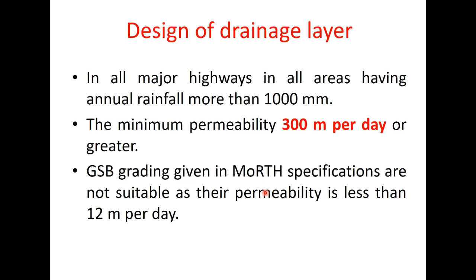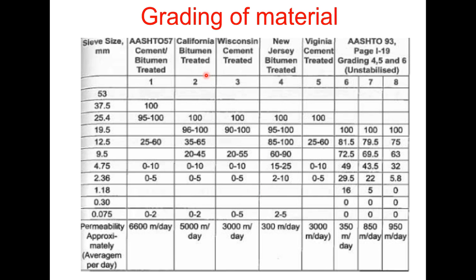And the gradings which are given in MORTH specifications for GSB are not suitable as their permeability is less than 12 meter per day. And therefore, gradings which are practiced in other countries are suggested and these are the gradings given in IRC 58 and 4, 6 and 7 can be used because they have the permeability value of 300 meter per day to 850 meter per day.